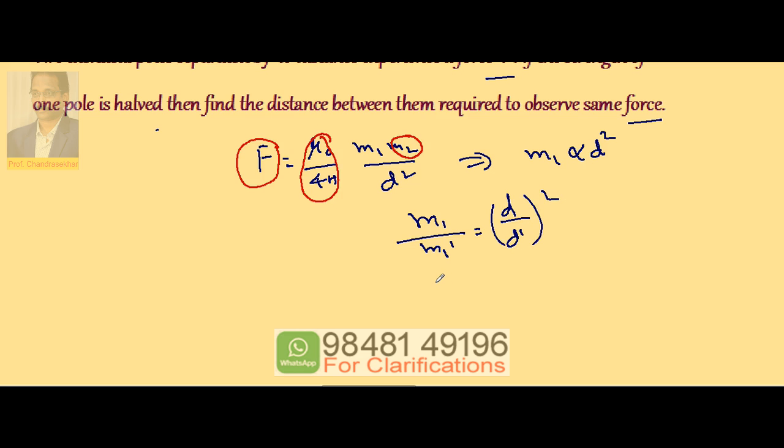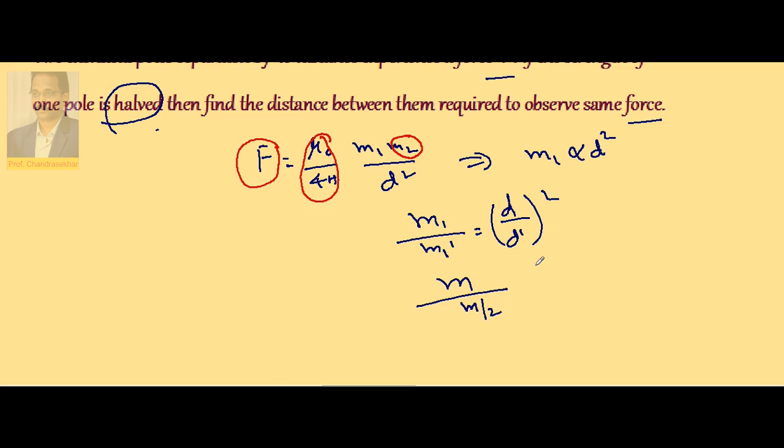So M1 is M, then M1 dash is, the pole is halved, pole strength we are making it half, so it is M by 2. This is D by D dash whole square.